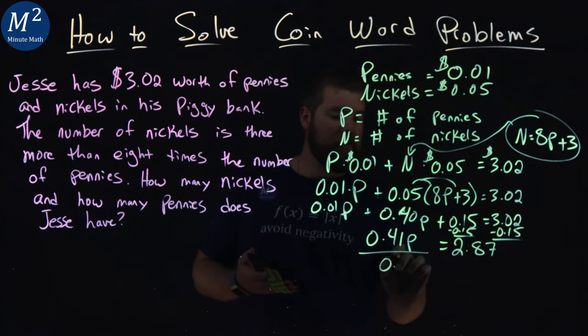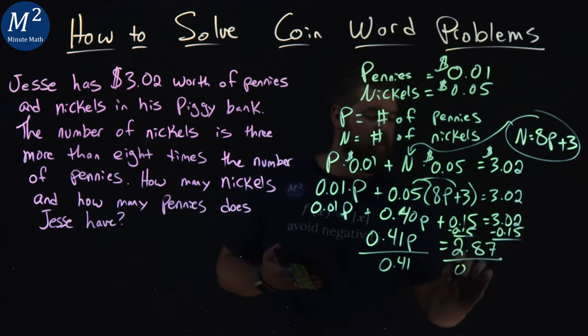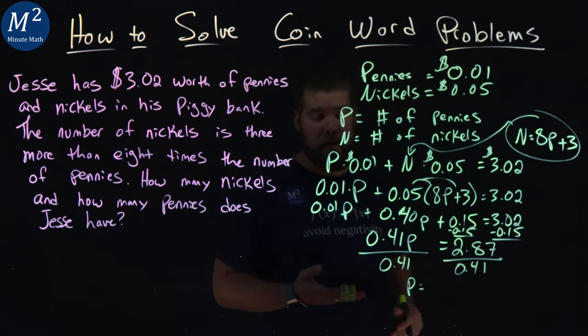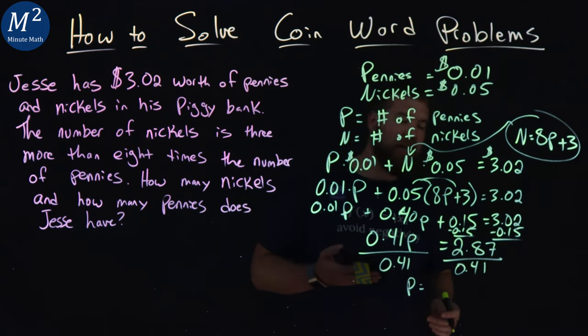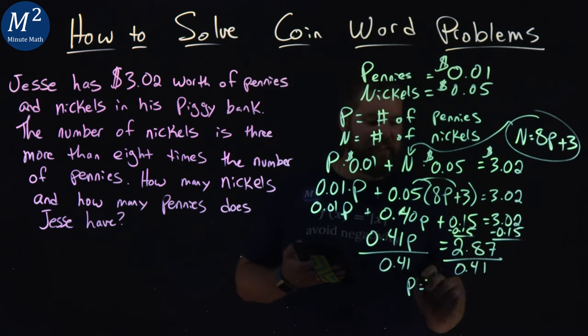Divide both sides by 0.41, and we get the number of pennies by itself. 2.87 divided by 0.41 is 7, so we have 7 pennies.